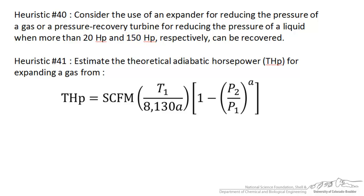Heuristic 41 specifically deals with the estimated theoretical adiabatic horsepower that we could get from reducing the pressure of a gas. Heuristic 42, which is not shown here, is a relationship for determining the same thing for a liquid. So let's take a look at the example.